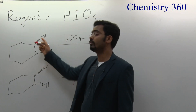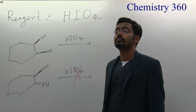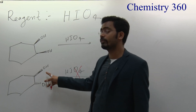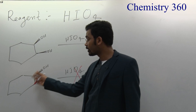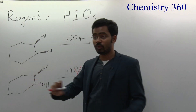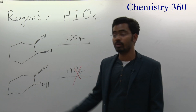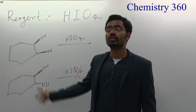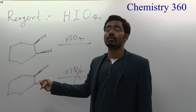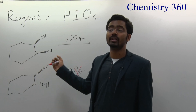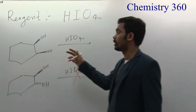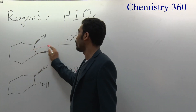But when both OH groups are on the same side, reaction occurs — because in a closed chain you cannot rotate the bonds, so the ester intermediate cannot form if the OH groups are anti. In a closed chain, rotation is not possible, unlike an open chain. So if the OH groups are anti in a cyclic compound, no reaction occurs because the iodine ester intermediate cannot form.